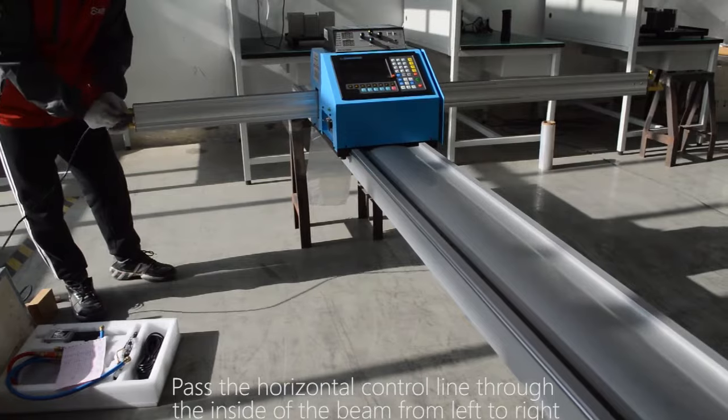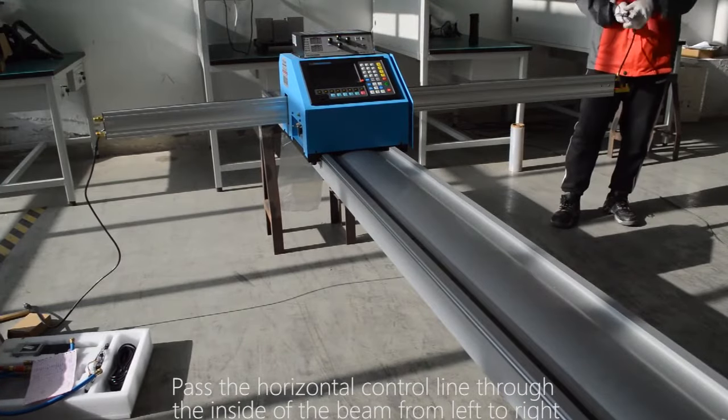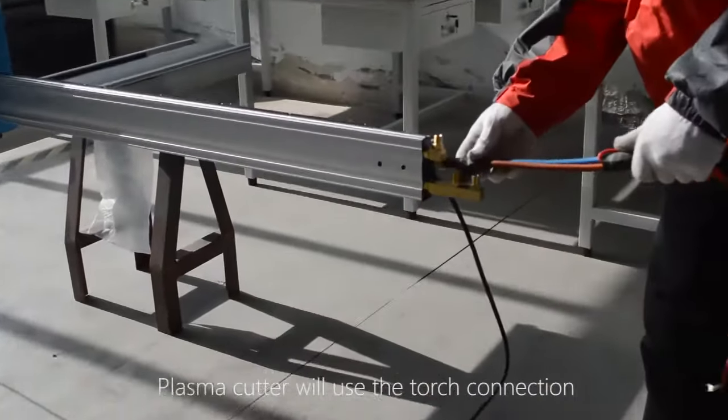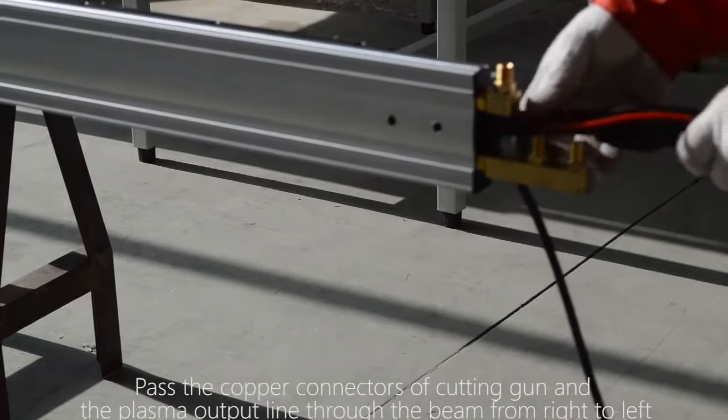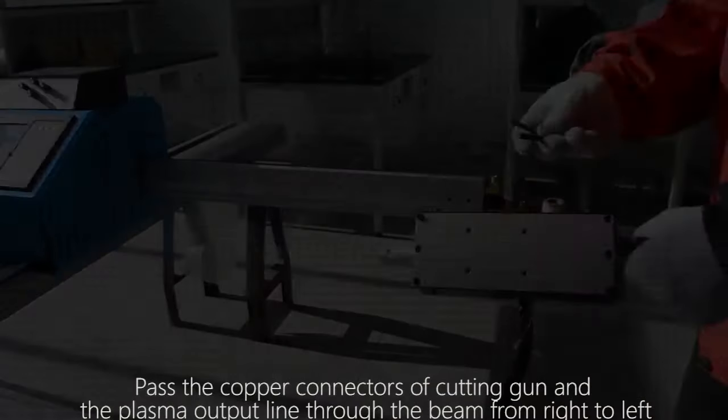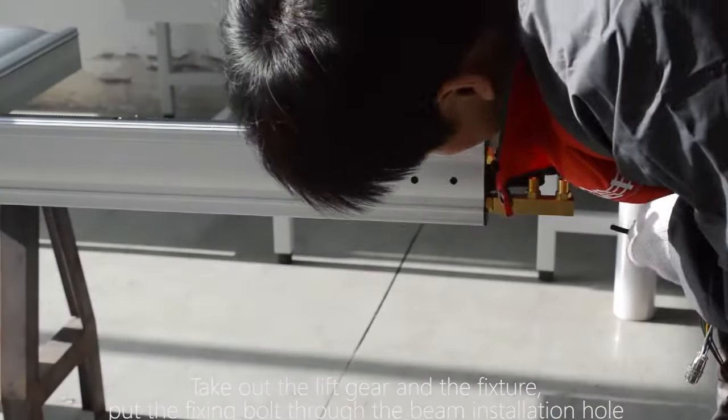Pass the horizontal control line through the inside of the beam from left to right. Plasma cutter will use the torch connection. Pass the copper connectors of cutting gun and the plasma output line through the beam from right to left. Take out the lift gear and the fixture.